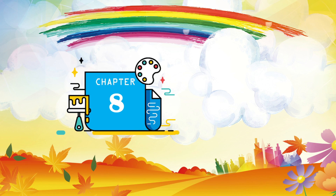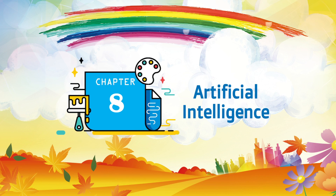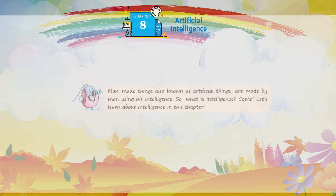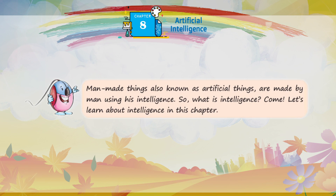Chapter 8: Artificial Intelligence. Man-made things, also known as artificial things, are made by man using his intelligence. So, what is intelligence? Come, let's learn about intelligence in this chapter.